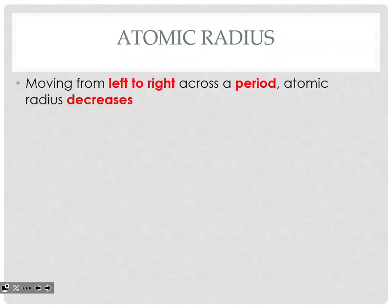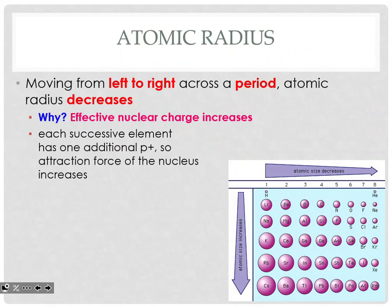From left to right across a period, the atomic radius decreases. Why? The effective nuclear charge is increasing. Each successive element has one additional proton, so the attractive force between the nucleus and the electrons is going to increase. From going from nitrogen, atomic number 7, to oxygen, atomic number 8 — it's a difference of one proton — but that one proton is a little bit more attractive. It pulls the cloud in just slightly, so you get a little bit smaller of an atom. Going left to right, they decrease across the period — the fallen-over snowman.